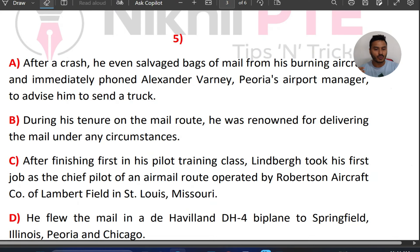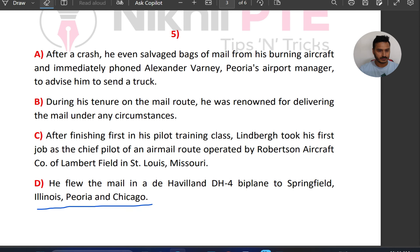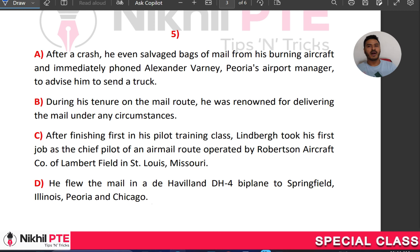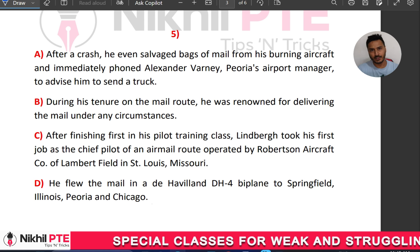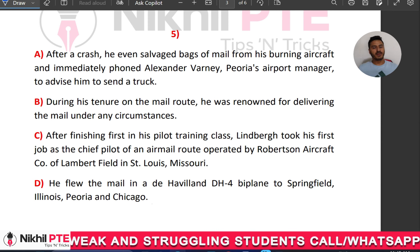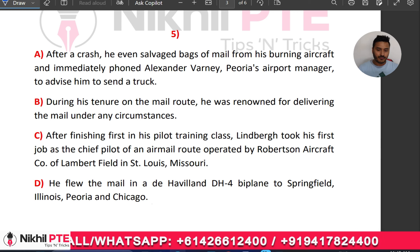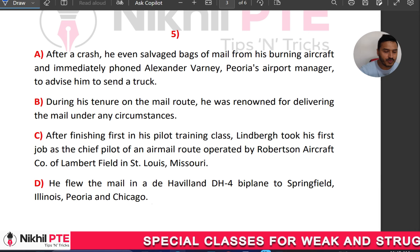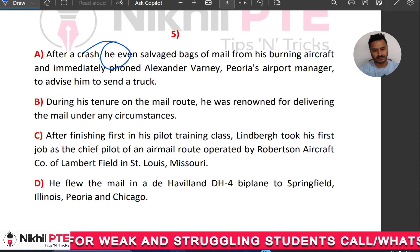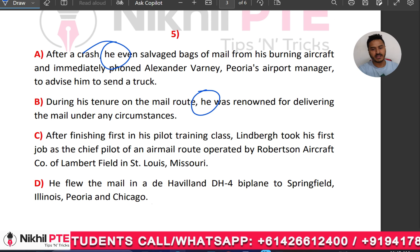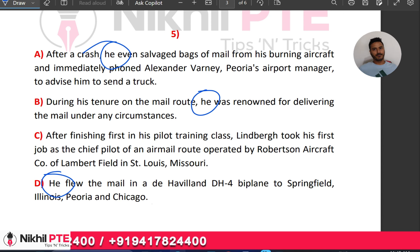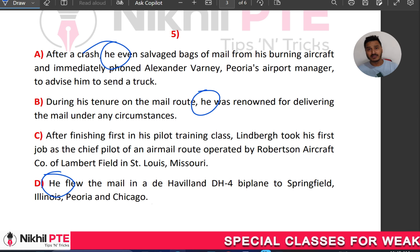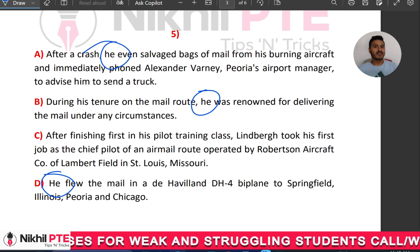Now, how we can use this in a real paragraph question. You have to find out nouns and pronouns in the options. If there is a pronoun, that means a noun exists somewhere in the question. If any option starts with a pronoun, that option may not come as an opening or independent sentence. For example, if options A, B, and D all contain 'he,' we are very sure the noun is present in option C.